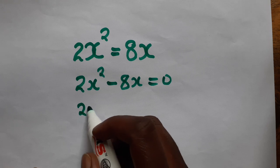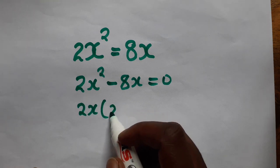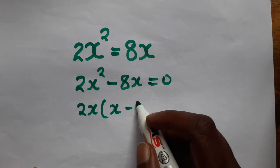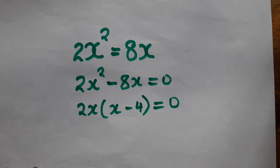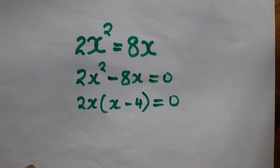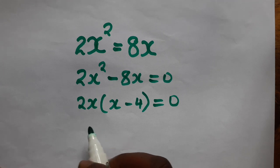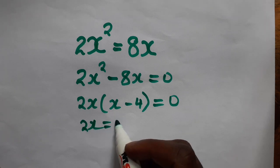Okay, and when we factorize at this point, you know now we need to equate each of these factors to zero.